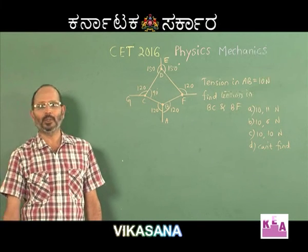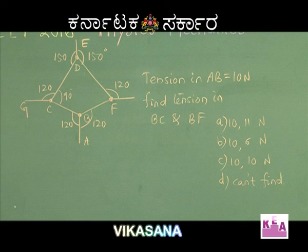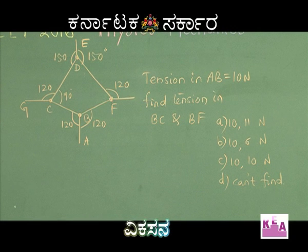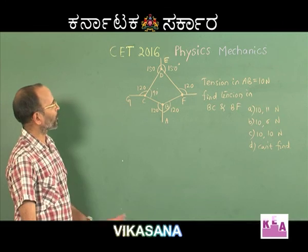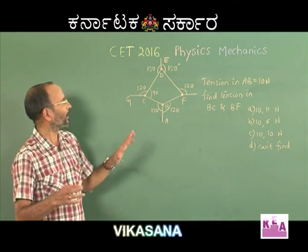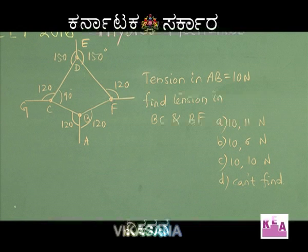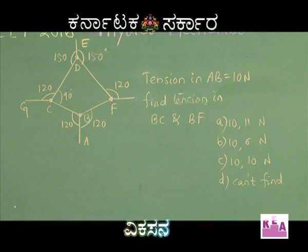Here is one more problem on equilibrium. This is a network of strings — part of a bigger network — currently in equilibrium with all strings taut. The tension in string AB is given as 10 newtons, and you must find the tension in BC and BF. Since it is a problem on equilibrium, the net force acting on any joint must be zero. Because the tension in AB is known, let us draw the free body diagram of joint B.